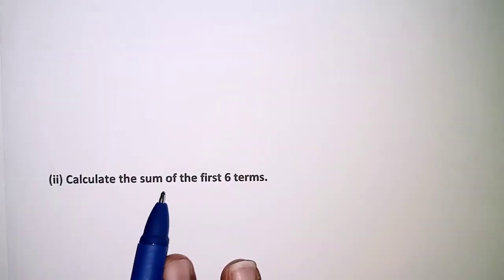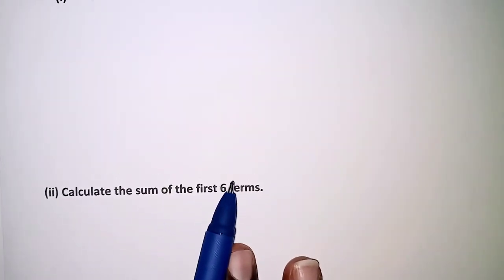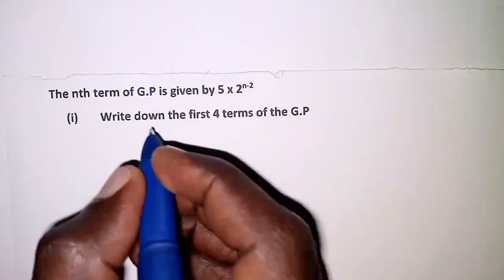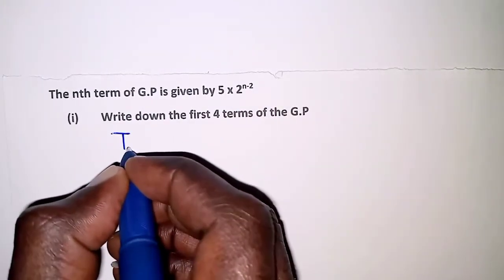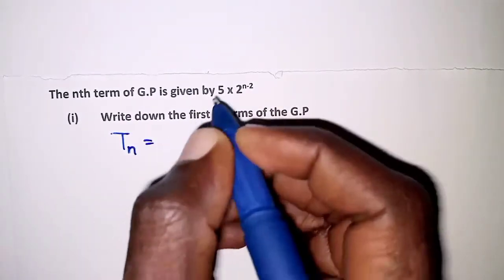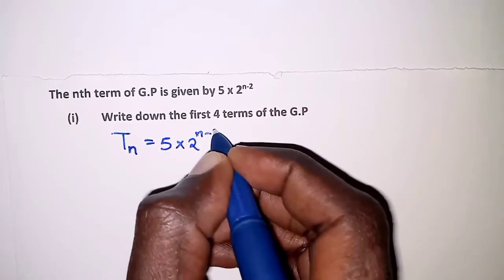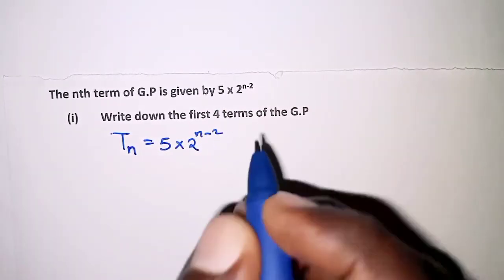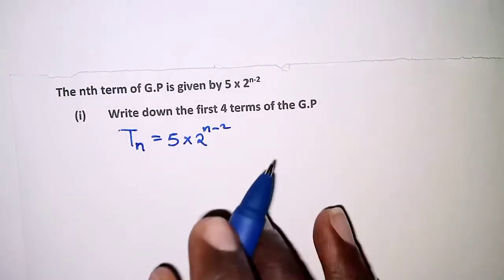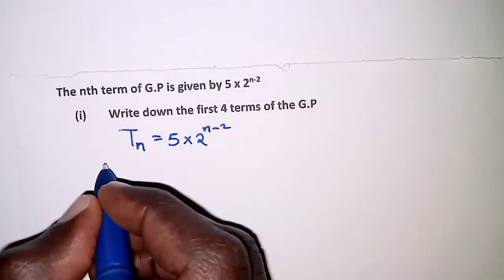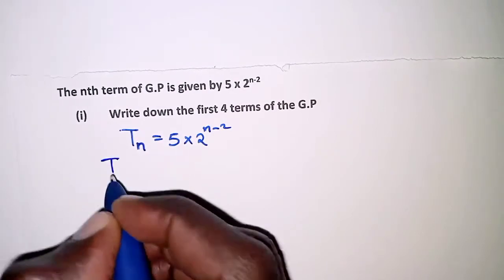part (ii): calculate the sum of the first six terms. So the nth term is given by 5 × 2^(n-2). For us to get the first four terms of this GP, then the first term